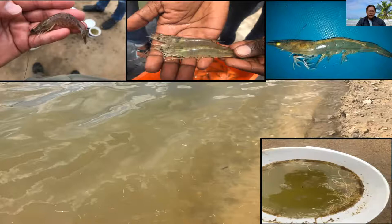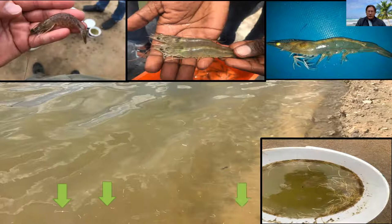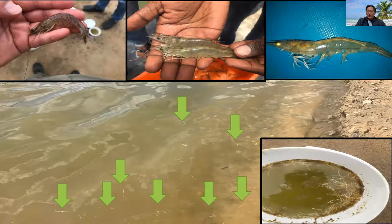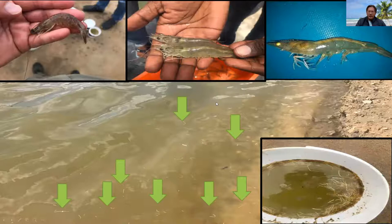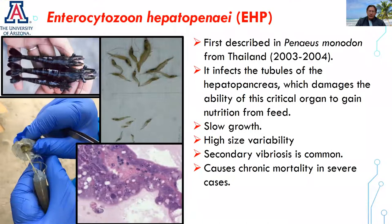First, I'd like to give the definition of White Feces Syndrome for our study. Basically, for our study, the presence of white or whitish floating fecal strings, as you can see here with the green arrows on the surface of the grow-out pond, along with the presence of shrimp displaying whitish discoloration of the GI tract, is what we consider the White Feces Syndrome for this study.